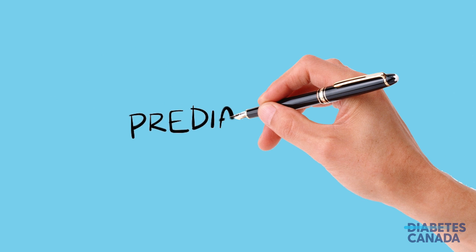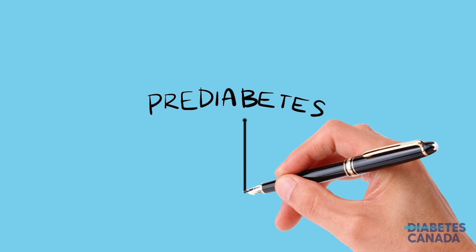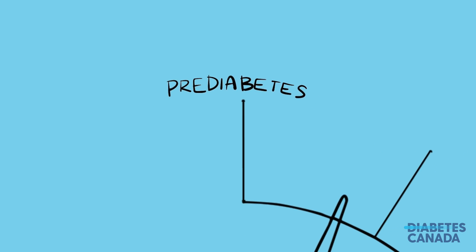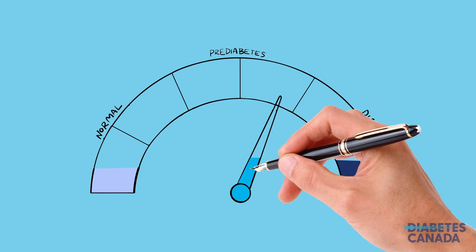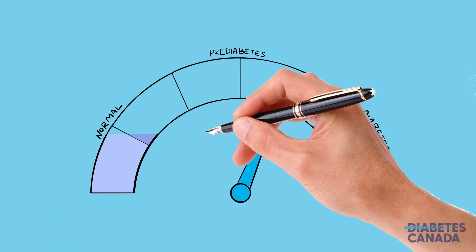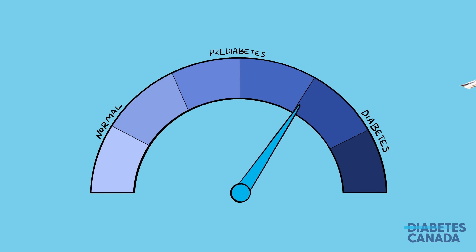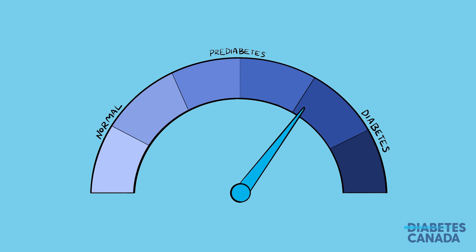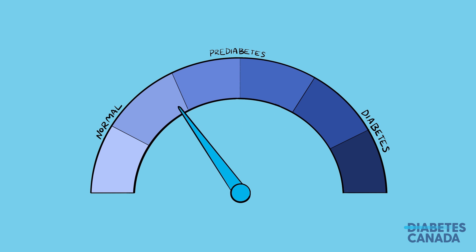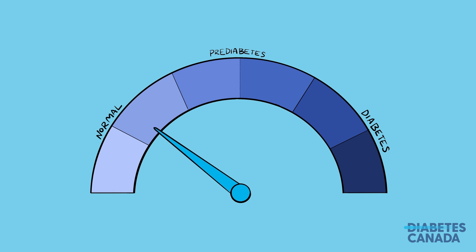It's also important to make note of pre-diabetes. This is a condition that, as the name suggests, often comes before type 2 diabetes. It occurs when a person's blood sugar is higher than normal, but not high enough to constitute a type 2 diabetes diagnosis. Healthy behaviors can often help to keep pre-diabetes from progressing to type 2 diabetes and can even get rid of pre-diabetes altogether.